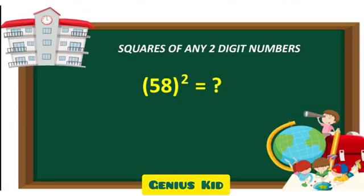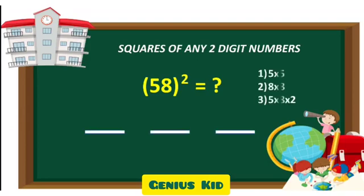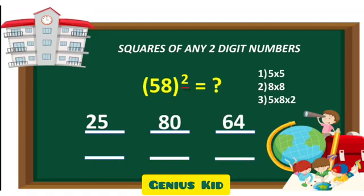Let's take another example. 58 square. We can find the first number by multiplying 5 by itself. Hence, 5 times 5 is 25. As 8 times 8 is 64, our last number will be 64. Our middle number will be 5 times 8 times 2, which is 80.